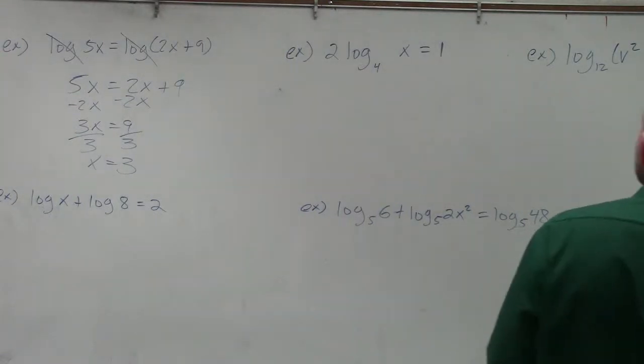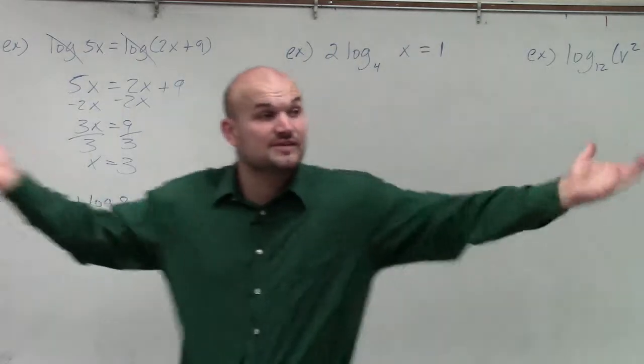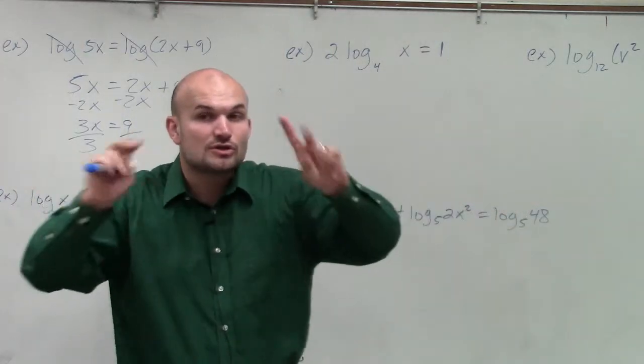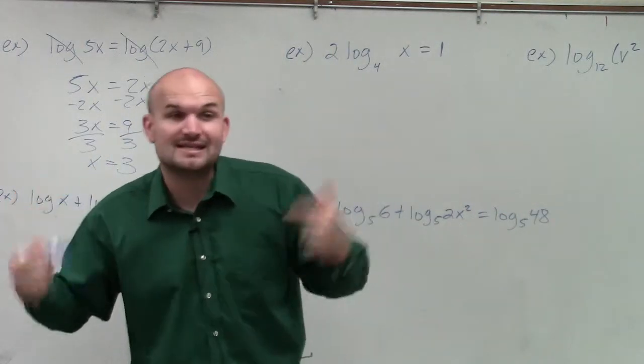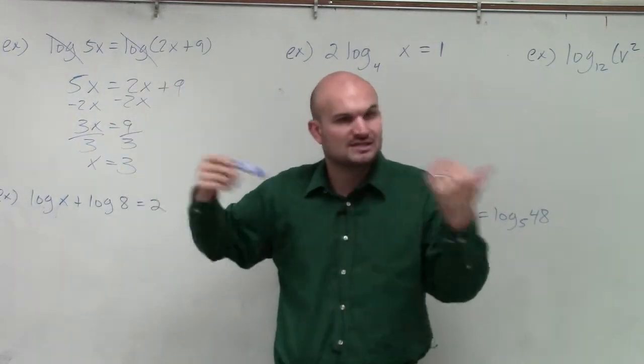Example, in this case, ladies and gentlemen, I have 2 times log base 4 of x equals 1. Now, in this case, we don't have a log on both sides. So there are two ways I showed you how to solve: either we use the 1 to 1 property, or you convert to exponential form.